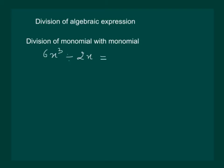This can be written as 6x cube whole divided by 2x, which can also be written as 6 multiplied by x multiplied by x multiplied by x whole divided by 2 into x. Now we can easily cancel 1x with 1x and we are left with 3x square.